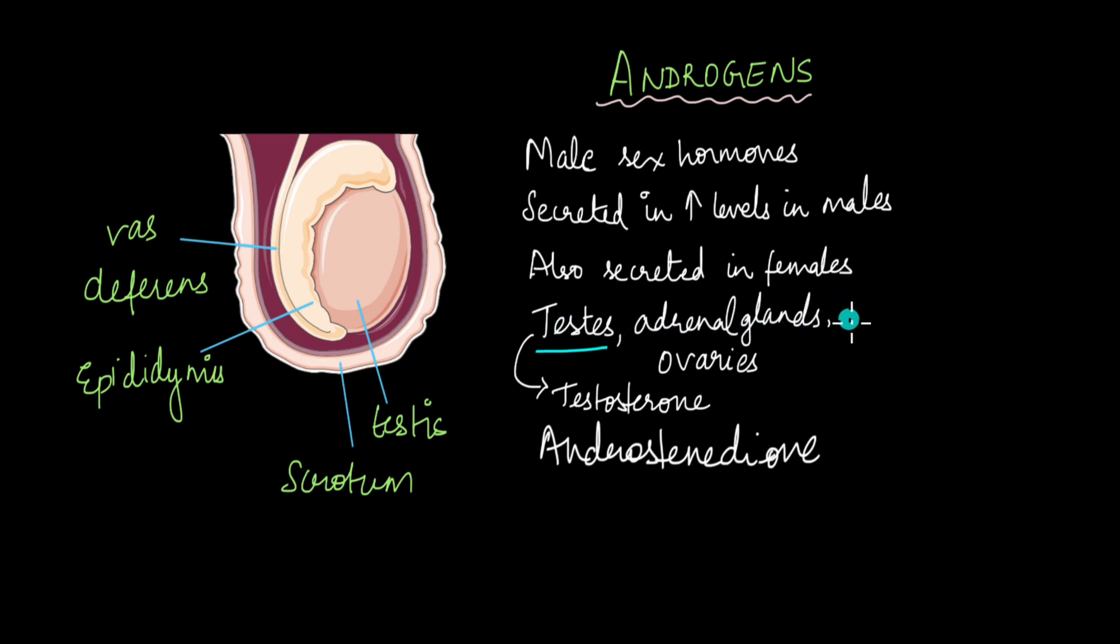The adrenal glands also secrete some amounts of testosterone and so do the ovaries. Yes, testosterone is produced in females as well and so are the female sex hormones like estrogen and progesterone. They are also produced in males but in lower quantities. The androgens are secreted in high quantities in males and the most common types of androgens include testosterone and this huge difficult to pronounce hormone called androstenedione.